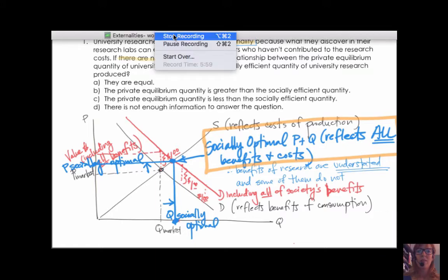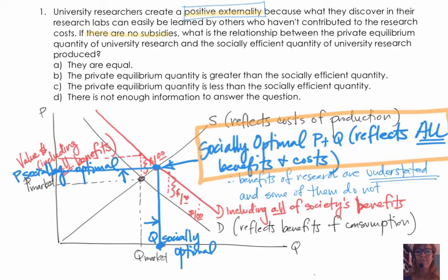Then we can realize that A is incorrect. We can realize that B is also incorrect. C looks like the correct answer. And D is incorrect because we actually do have enough information to answer the question.